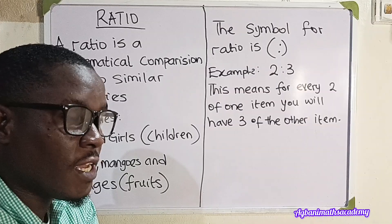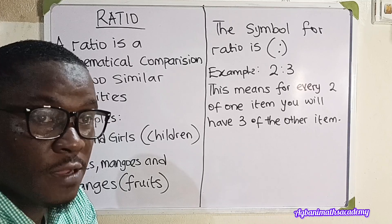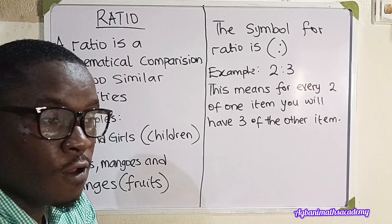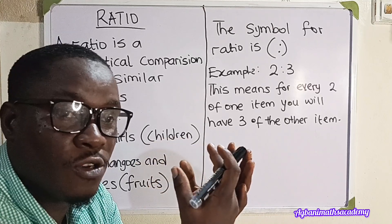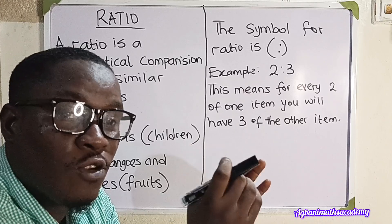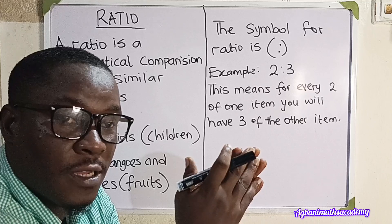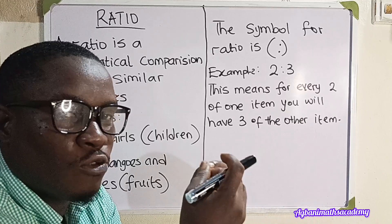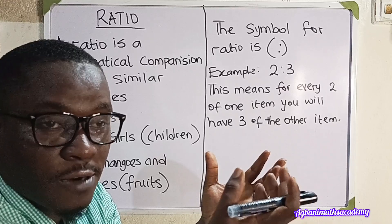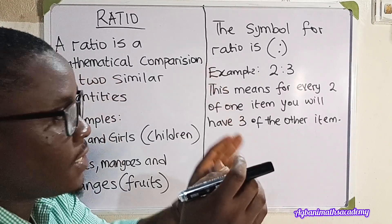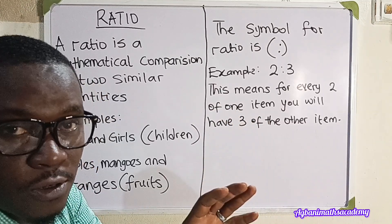This is a very important topic because its application can be seen in different areas of life. For example, in pharmaceuticals where they produce drugs: a particular drug is a product or combination of different chemicals in particular quantities. If you bring these quantities together in an amount that is not good for human consumption, then instead of it becoming a drug, it becomes a poison. So for you to produce a particular drug, there is a ratio of each ingredient needed.